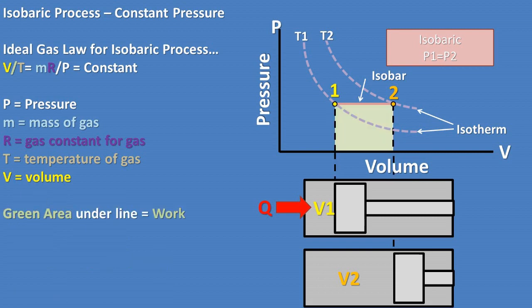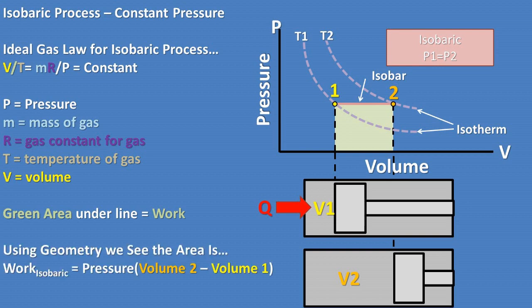To find the work, we once again need to find the area under the line or isobar in this case. Looking at the graph, we can see that it is a rectangle. This means that we can take the pressure times the difference of volume two minus volume one to get the area. We simply took the height times the width.